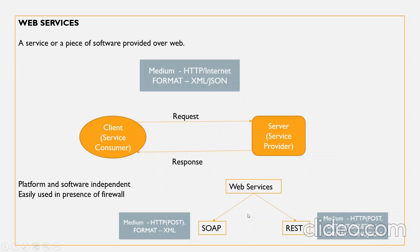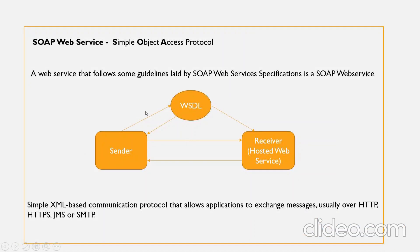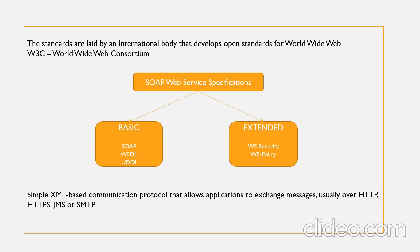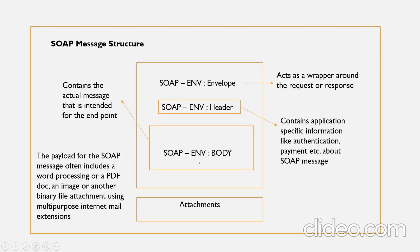Let's now discuss more about SOAP web service. A web service that follows guidelines laid by the SOAP web services specification is called a SOAP web service. These guidelines are defined by an international body that develops open standards for the World Wide Web called W3C — the World Wide Web Consortium. The SOAP web service specifications are of two types: basic and extended. Extended specifications are used for enterprise level, and under basic we have SOAP, WSDL, and UDDI. SOAP defines the protocols or rules on how two applications will talk to each other over the web, and all message exchange happens over a common format called XML.